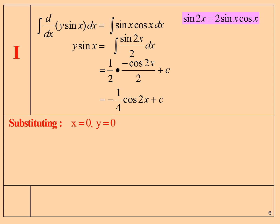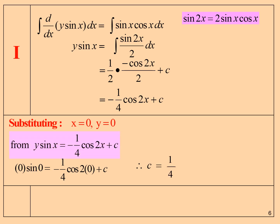Substitute x = 0 and y = 0 to find C. We get C = 1/4. Therefore, y·sin(x) = -1/4·cos(2x) + 1/4.